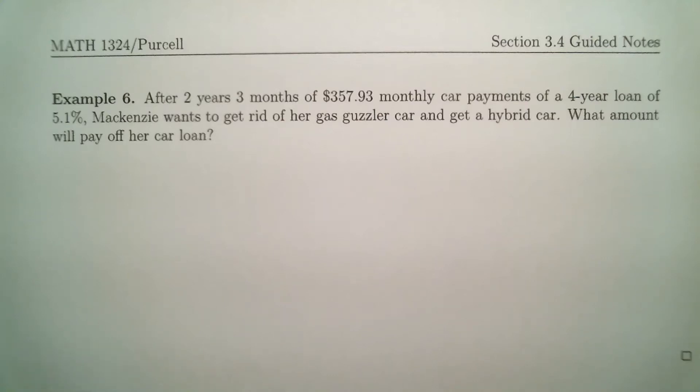Example six. After two years, three months of $357.93 monthly car payments of a four-year loan of 5.1%, McKenzie wants to get rid of her gas guzzler car and get a hybrid car. What amount will pay off her car loan? As soon as you read this, you should immediately be thinking unpaid balance.